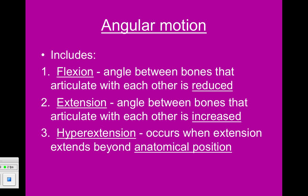Hyperextension occurs when the extension goes beyond normal anatomical position. This is easy to see with the wrist — you can flex your wrist by pushing your palm down towards your arm, bring it back to anatomical position for extension, or bend your wrist backwards so that the palm faces up towards the sky, and that is hyperextension. Sometimes hyperextension is normal, like with the wrist, but it can also be problematic — hyperextending a joint can create issues with the ligaments and tendons around the joint.